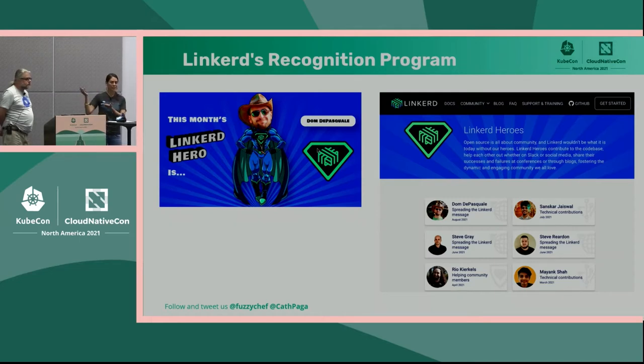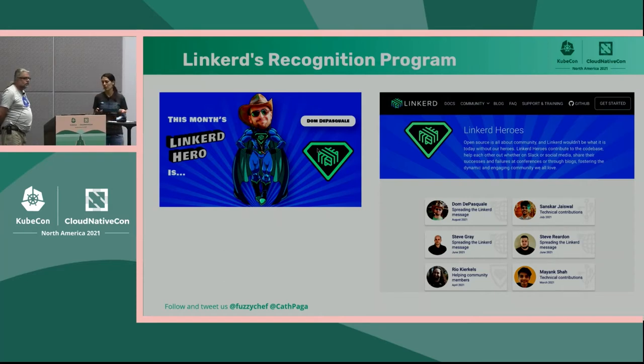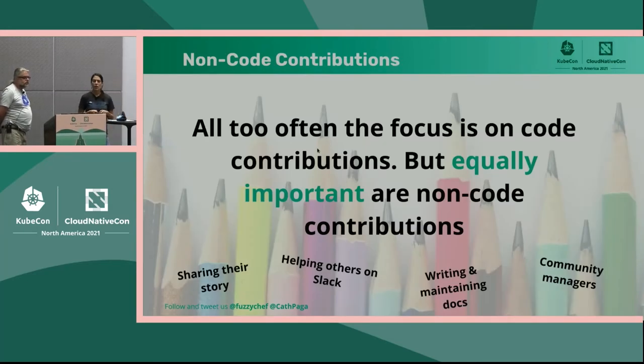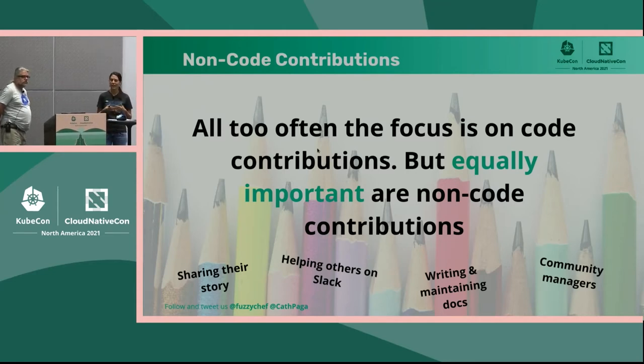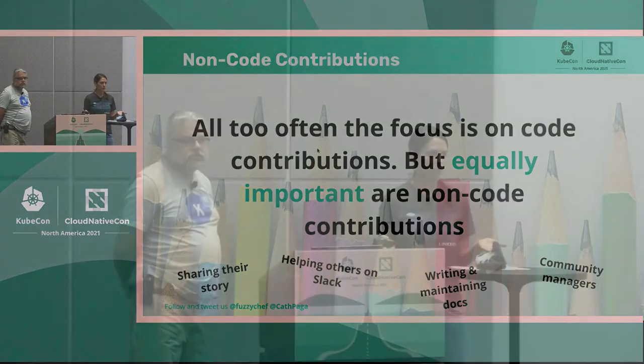We try to make it fun and engaging: everyone who becomes a hero can be found on the website, we write a little blog post about them, and there's social media around it. People really enjoy that. But there is so much more to a thriving community than code. Of course you need awesome features, but who cares about the features if no one is talking about your project, or if it's impossible to implement because the docs are incomplete, or because it's difficult to get help because the maintainers are too busy to explain things to people?